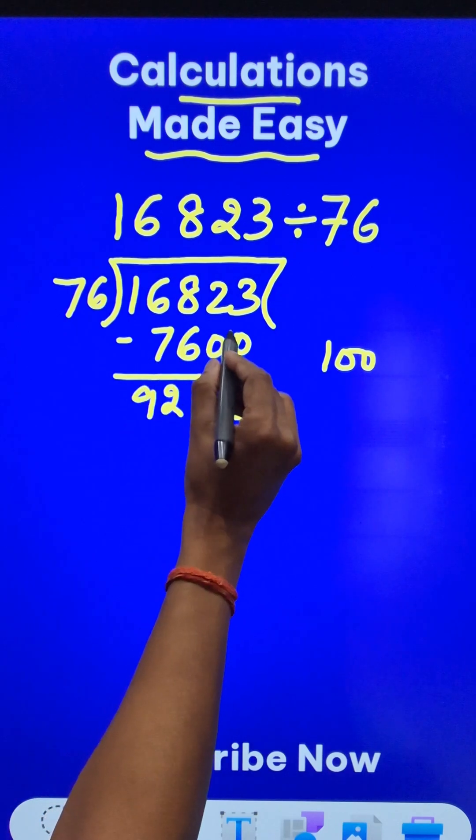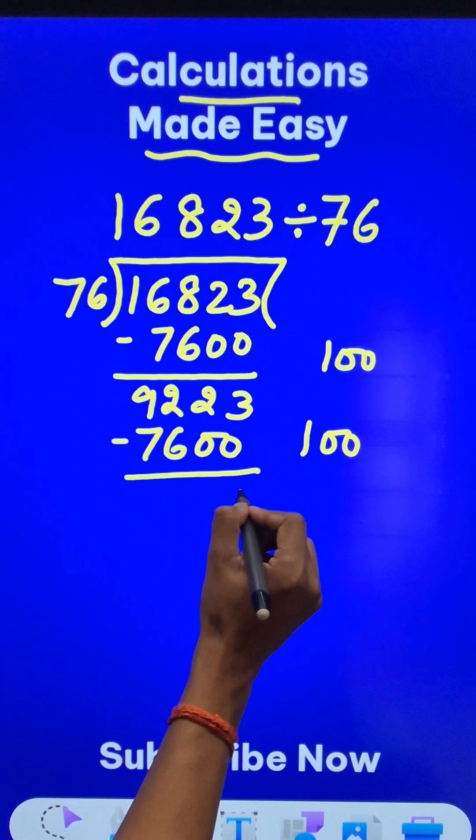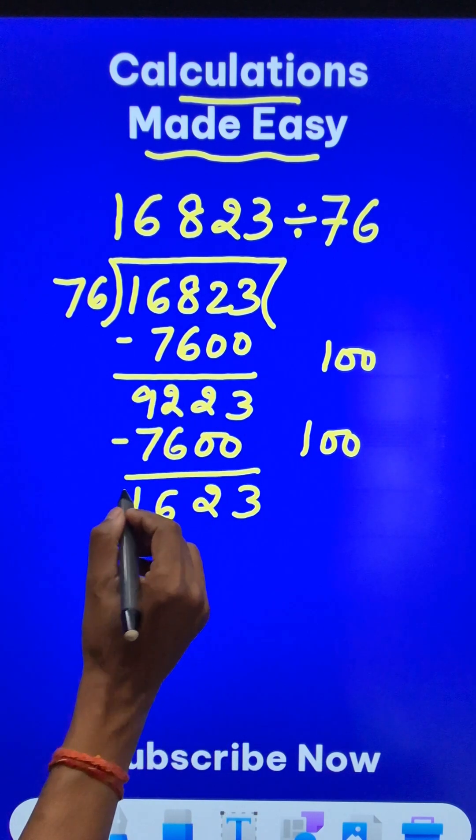Now this is again greater than 7600 so let's take another 100 and subtract 7600 from this. You will get 1623.